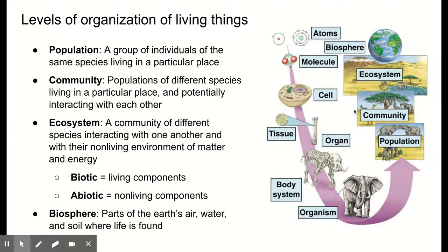A community is what you get when you take multiple populations in the same area. So in our savannah area, the herd of elephants, plus all the acacia trees, plus the giraffes, kudu, and hyenas — all those living things in that same area — that is our community. An ecosystem is our community plus all of the non-living things in the environment around them: the water, sunlight, chemical nutrients in the soil, all the non-living parts plus all the living things interacting. That's our ecosystem.